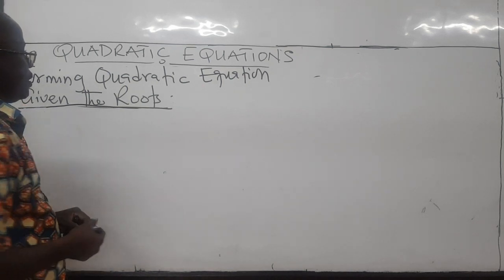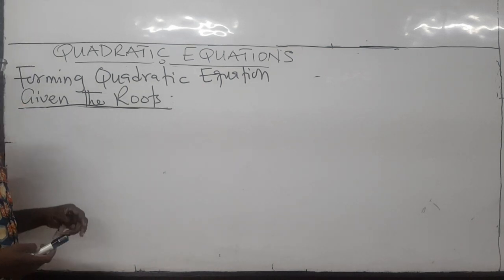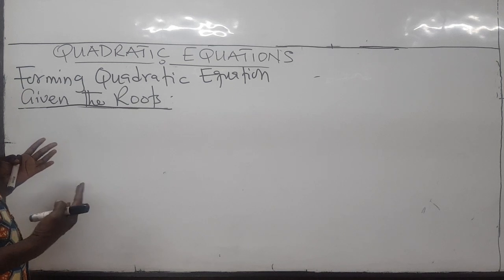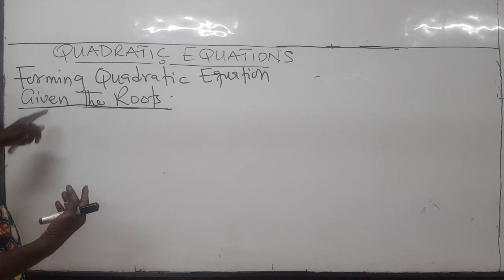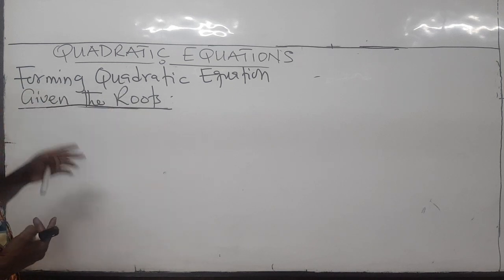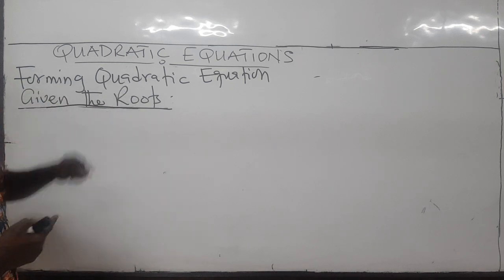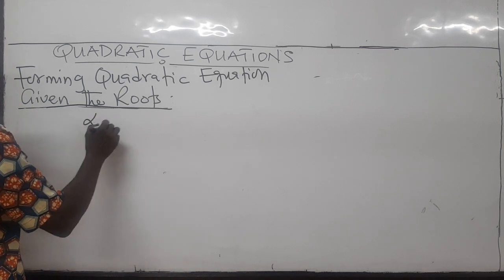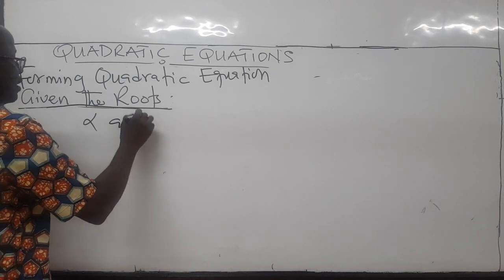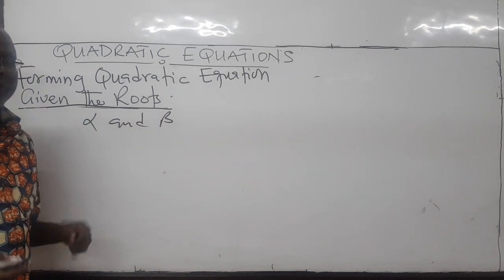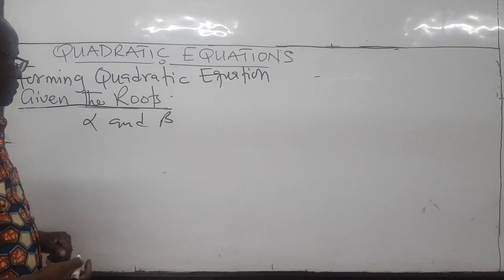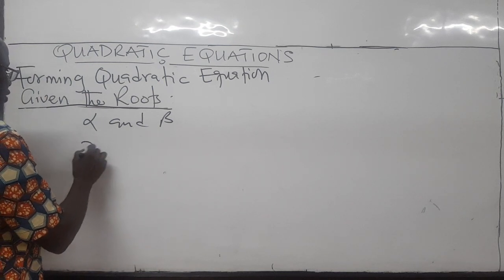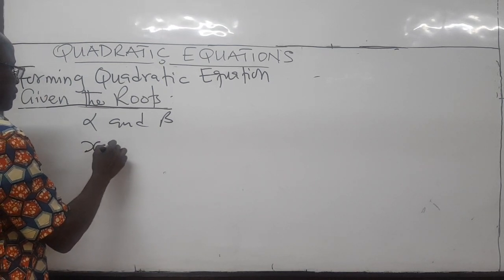Hello, everyone. Here we want to start by understanding how you form quadratic equations when you are doing the roots of the equation. Suppose that alpha and beta are the roots of the quadratic equation. Then to form a new quadratic equation, you do that by doing this.